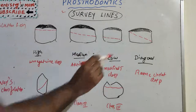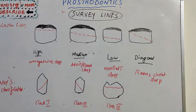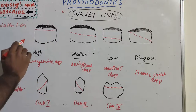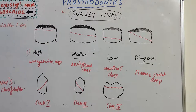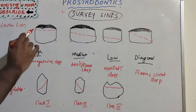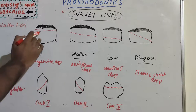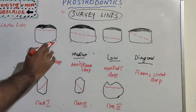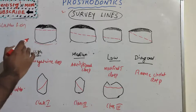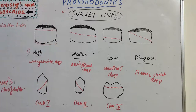The first type is the high survey line. It is found near the occlusal surface of a tooth — you can see the line is near the occlusal surface. It is often parallel to the gingival margin.